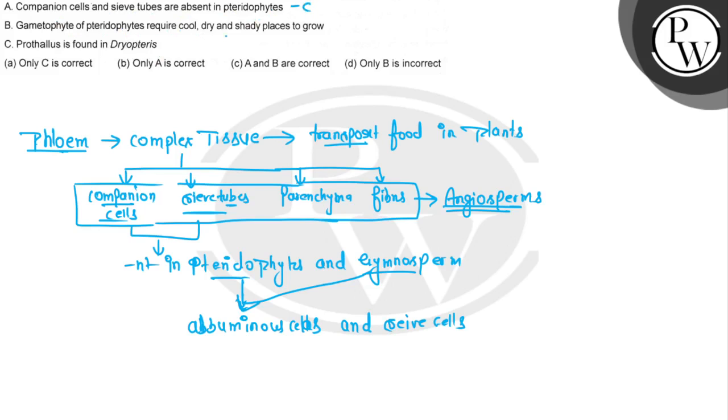Statement B says pteridophytes require cool, dry, and shady places to grow. This is wrong - when it says dry, it should be damp, not dry.